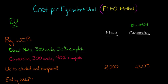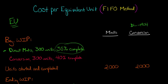First things first, we have to get to our beginning work in process inventory, and we're going to have work in process for direct materials and for conversion costs. Starting with direct materials: we have 300 units that are work in process and they're 35% complete — 35% finished. That means they're 65% incomplete. So we multiply 300 by 65%, which gives us 195 equivalent units.